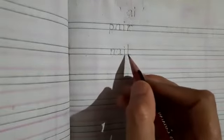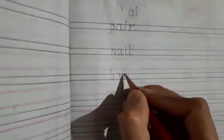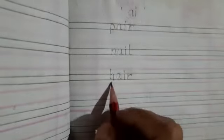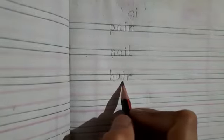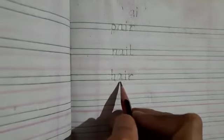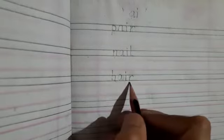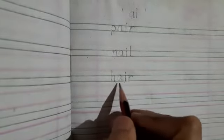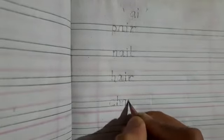Next word: N-A-I-L. Two vowels together say one sound, and the sound is 'a', the name of the first letter. So here it is: nail. Next is H-A-I-R — hair. H-A-I-R, hair.